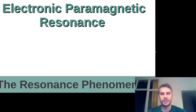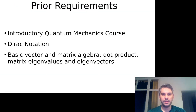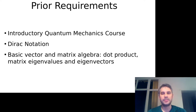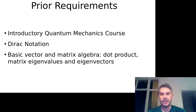Hi, this is the first video of my new series on electron paramagnetic resonance. This lecture is on the resonance phenomenon. Throughout the first lectures I will assume that you have some basic quantum mechanics — introductory quantum mechanics — that you are familiar with Dirac notation and that you have basic vector and matrix algebra knowledge, including dot product, matrix eigenvalues, and eigenvectors.